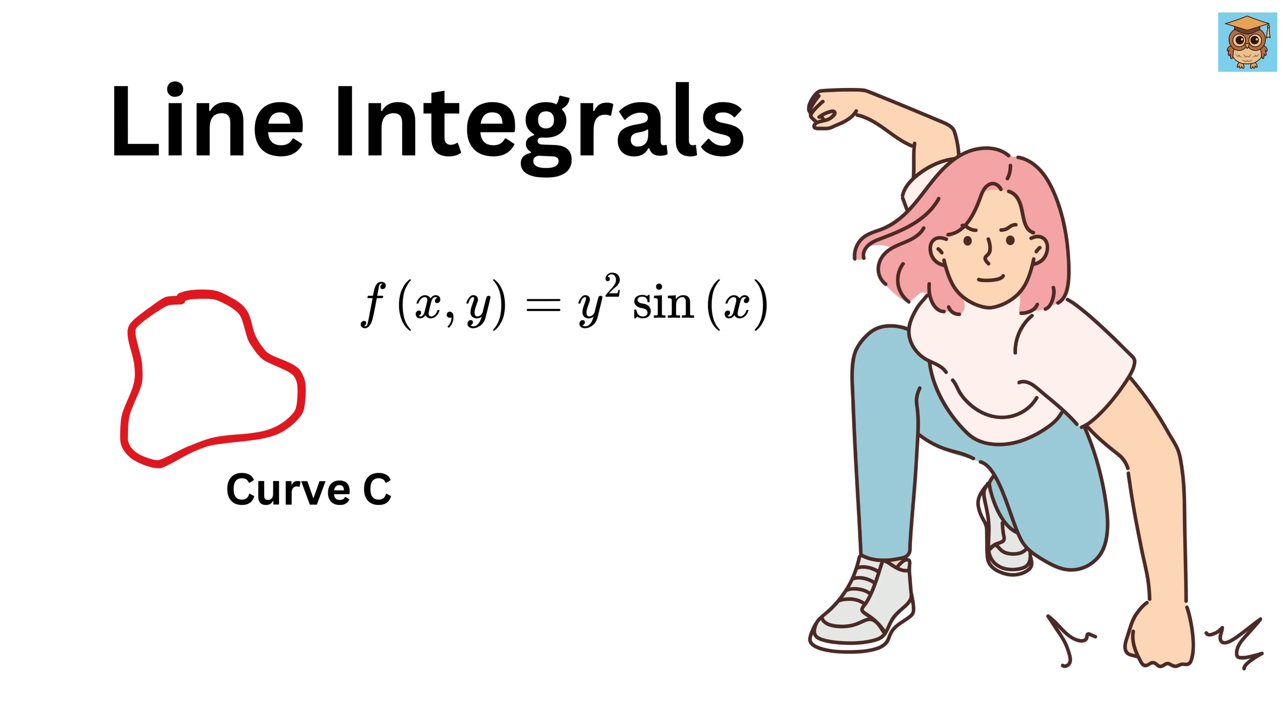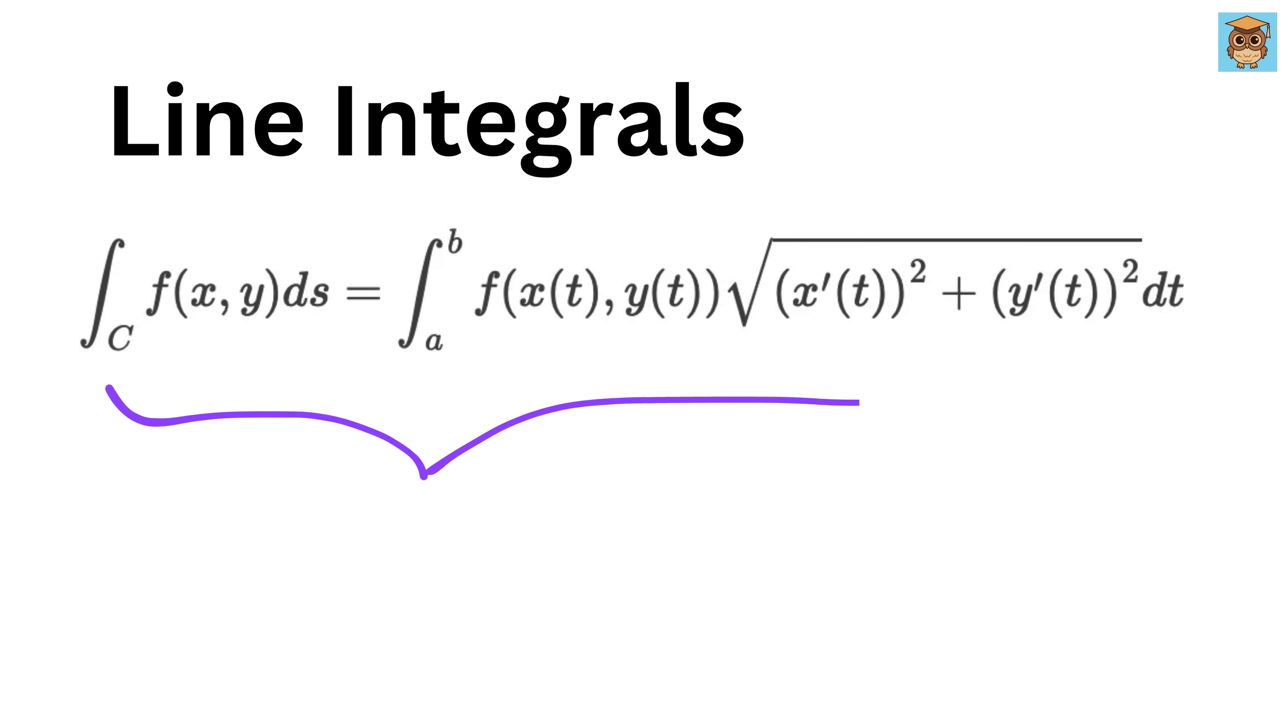So now let us start. What we will do is try to understand this formula, what it actually means, using a real-life example. Let's begin with something simple. Imagine you have a thin wire lying along a curved path, say a quarter circle of radius 3 meters.